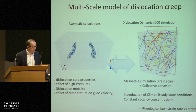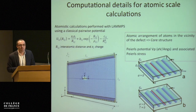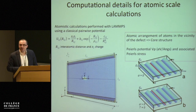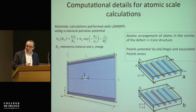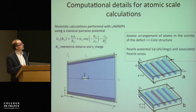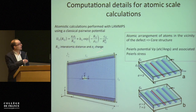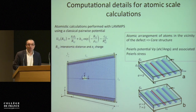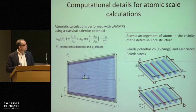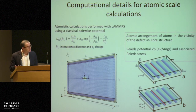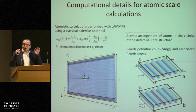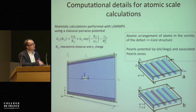Let's start with the first step of the modeling: atomistic calculation. Most of the results I will show come from classical molecular dynamics simulations. Here is an example of a simulation cell containing more than hundreds of thousands of atoms with a dislocation inside. We look for intrinsic properties — specifically what we call the core structure, i.e., how atoms are arranged near the core — and we also try to track the motion of the dislocation.